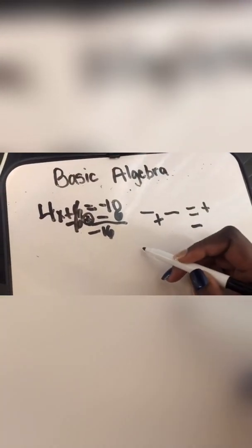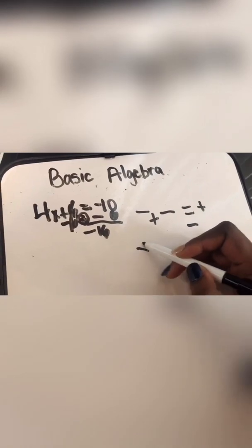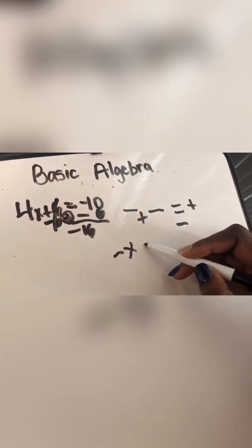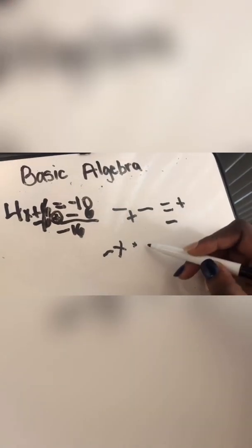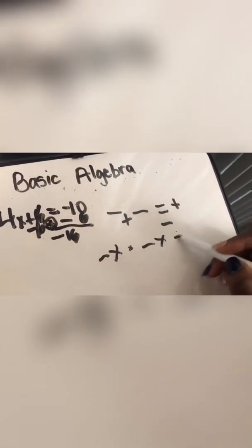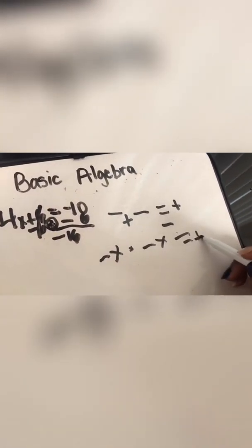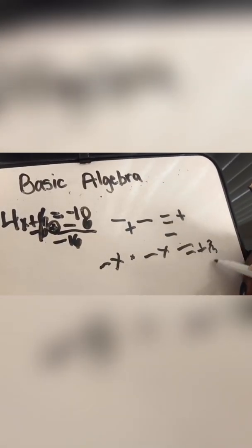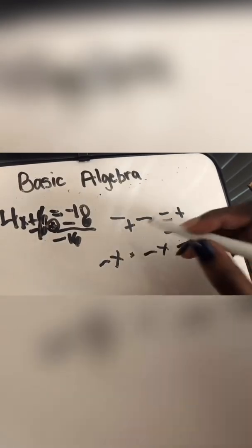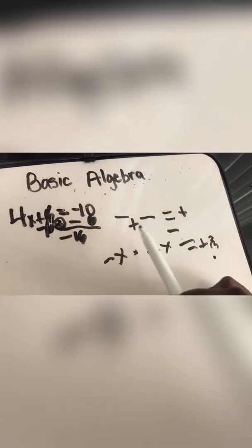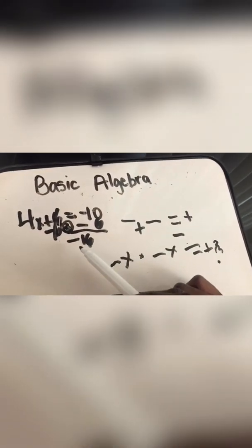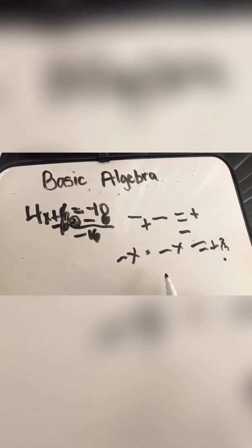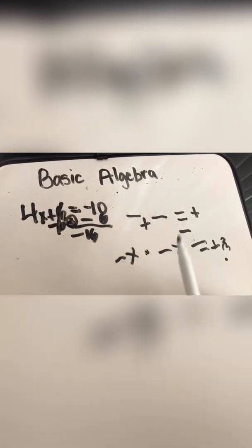If it's multiplication, it's going to be a positive answer. It's going to be a positive answer. But since we're dealing with an addition with that answer, it's going to be a negative 16. Not a positive.